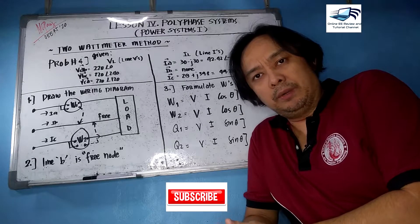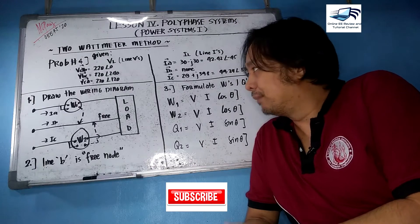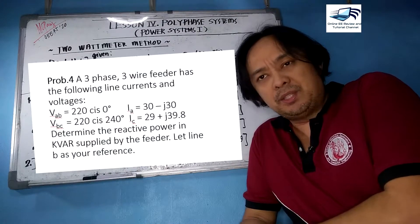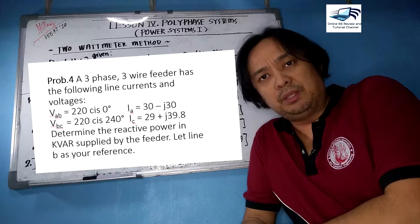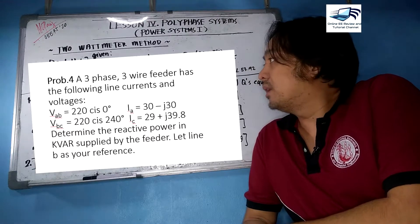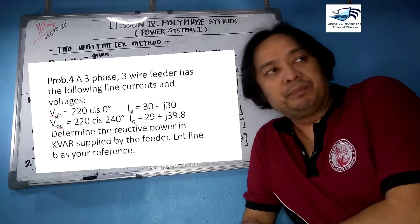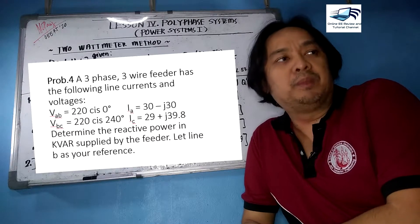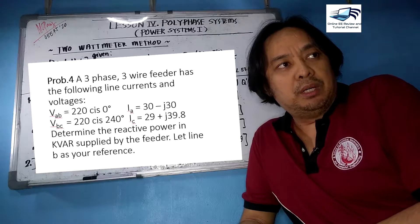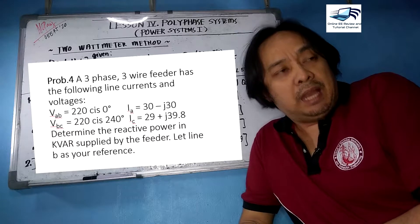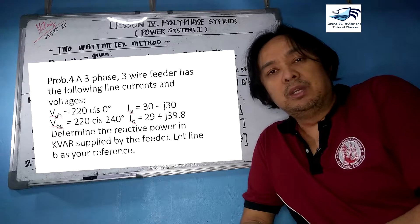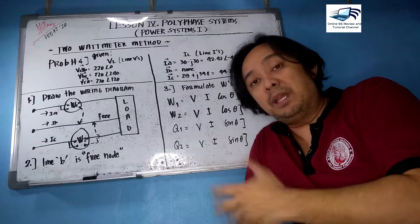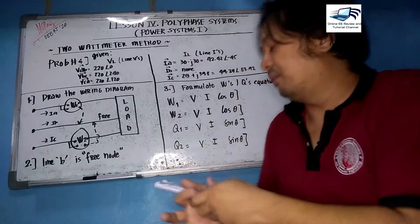Hi and good day to all of you. We are on our last problem, and obviously the last problem is an unbalanced system. Let us read the problem first. Problem number four: a three-phase three-wire feeder has the following line currents and voltages. Vab is equal to 220∠0°, then 220∠240°. The line currents are 30−j30 and Ic is equal to 29+j39.8. Determine the reactive power in kVAR supplied by the feeder. Let line B be your reference.